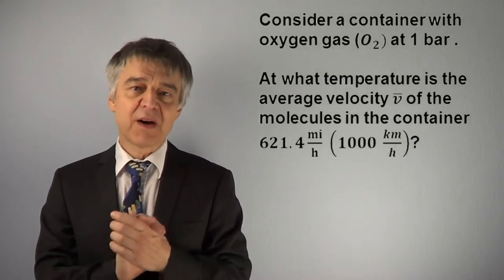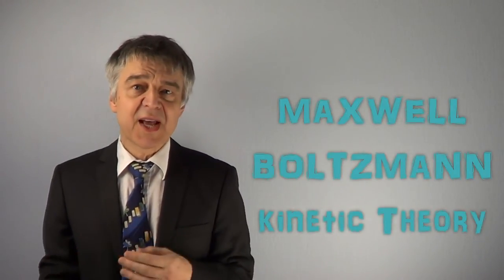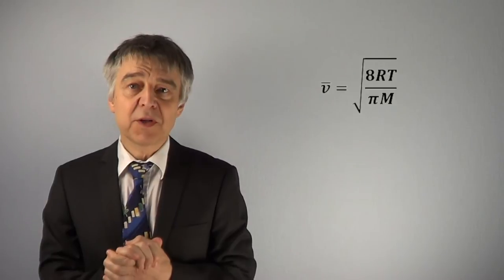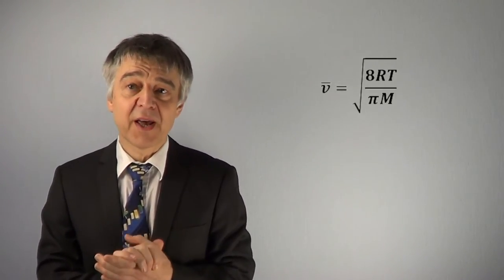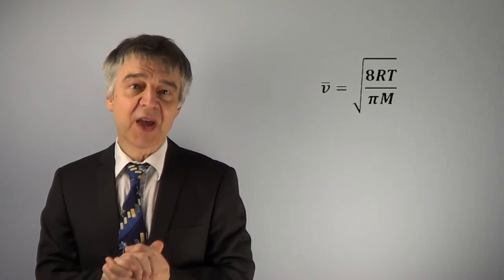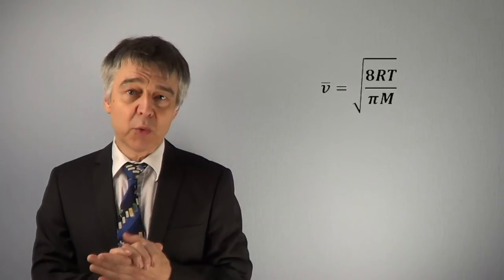That is 1000 kilometers per hour. According to the Maxwell-Boltzmann theory, the average velocity in a gas is the square root of 8RT over πM, where R is the gas constant, T is temperature in Kelvin, and M is the molecular weight.